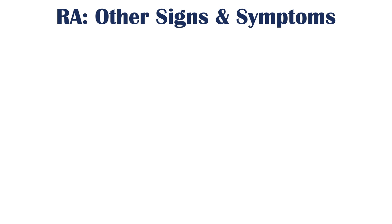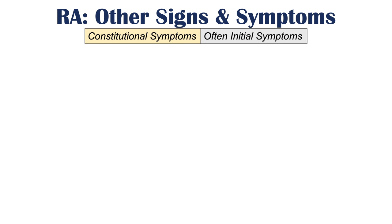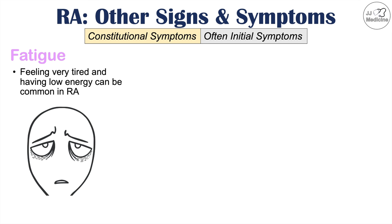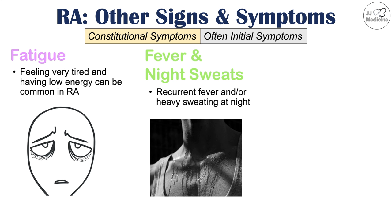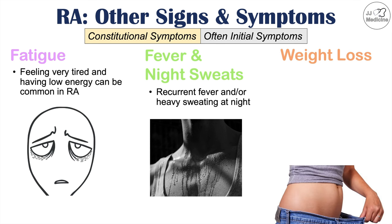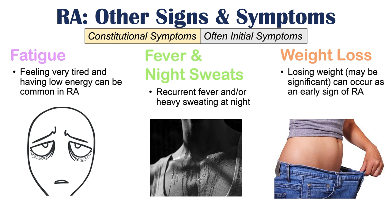Beyond joint findings, there are many systemic and extra-articular manifestations. Constitutional symptoms are oftentimes the initial presenting symptoms, occurring before any noticeable joint symptoms. These include fatigue — feeling very tired with low energy — fever and night sweats including drenching night sweats, and significant weight loss. These are important early signs in rheumatoid arthritis patients.